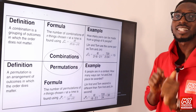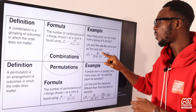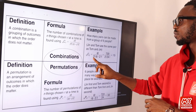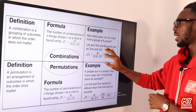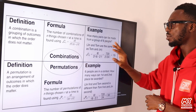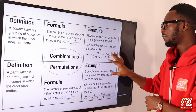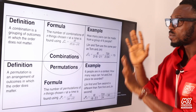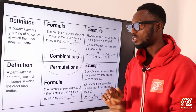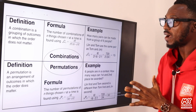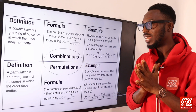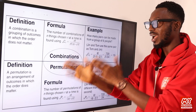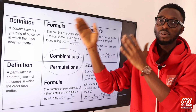This symbol that looks like an exclamation mark is called factorial. So we have six factorial over two factorial times six minus two factorial — that is where we pull this formula from. Then, for permutation: permutation is an arrangement of outcomes in which the order matters. Order counts for permutation; order doesn't count for combination.